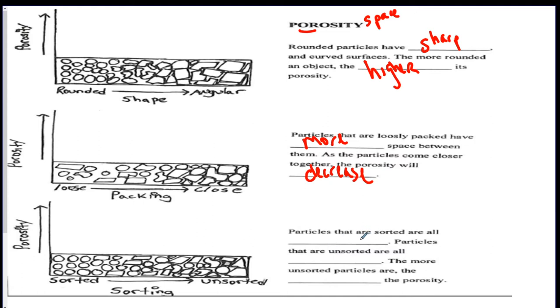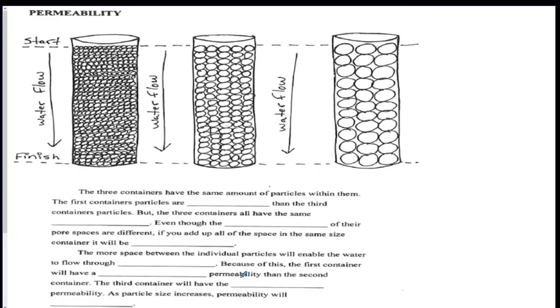Particles that are sorted are all the same size. Particles that are unsorted are all different sizes. The more unsorted particles are, the less the porosity should be. Remember, if they're all unsorted, there's less space because you've got the small particles filling in the gaps between the big particles.